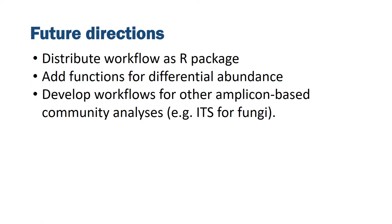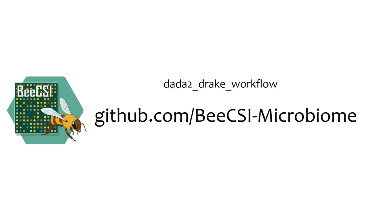In the future, we would like to distribute this workflow as an R package. We would also like to add functions for differential abundance and develop workflows for other amplicon-based community analyses, for example ITS for fungi. Most importantly, we want to build a community around the development of this package, and we have our GitHub site at bcsi-macbiome, where we have our repository for this workflow.